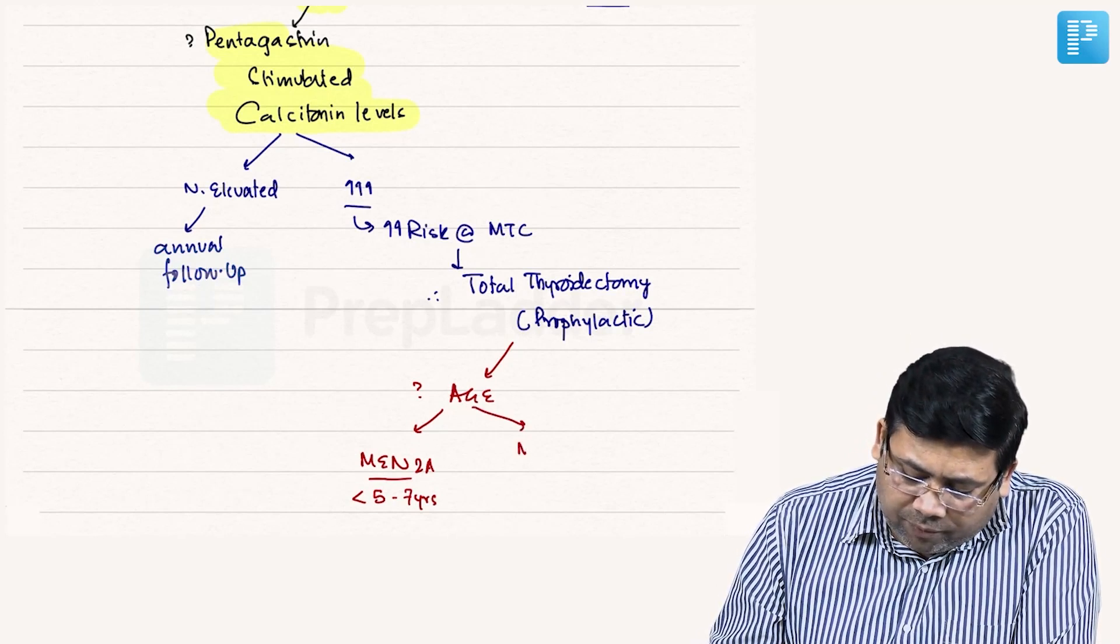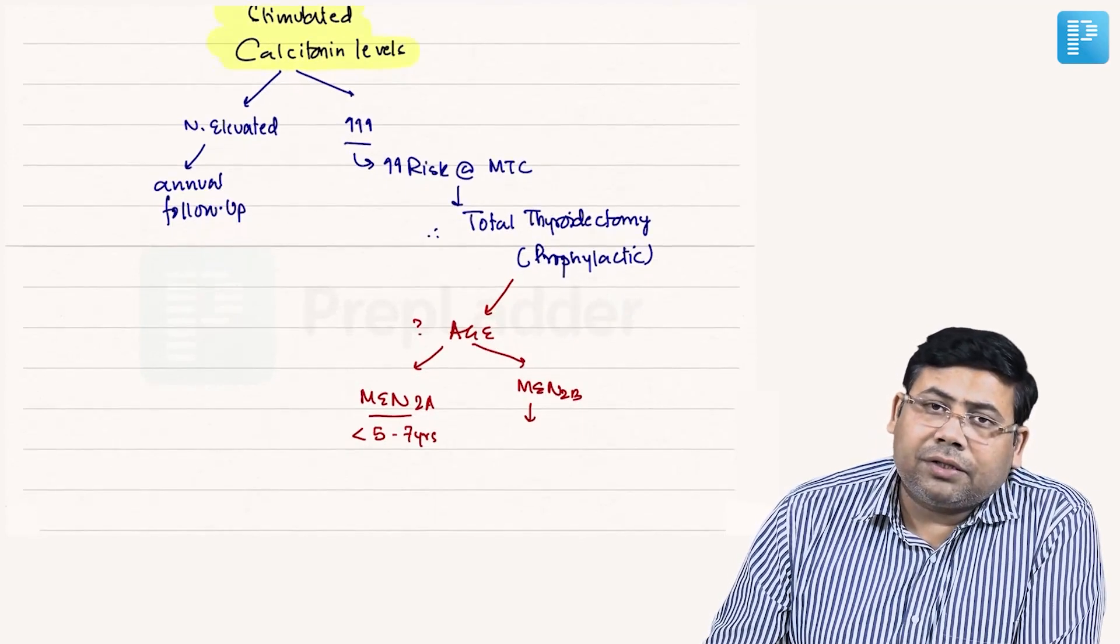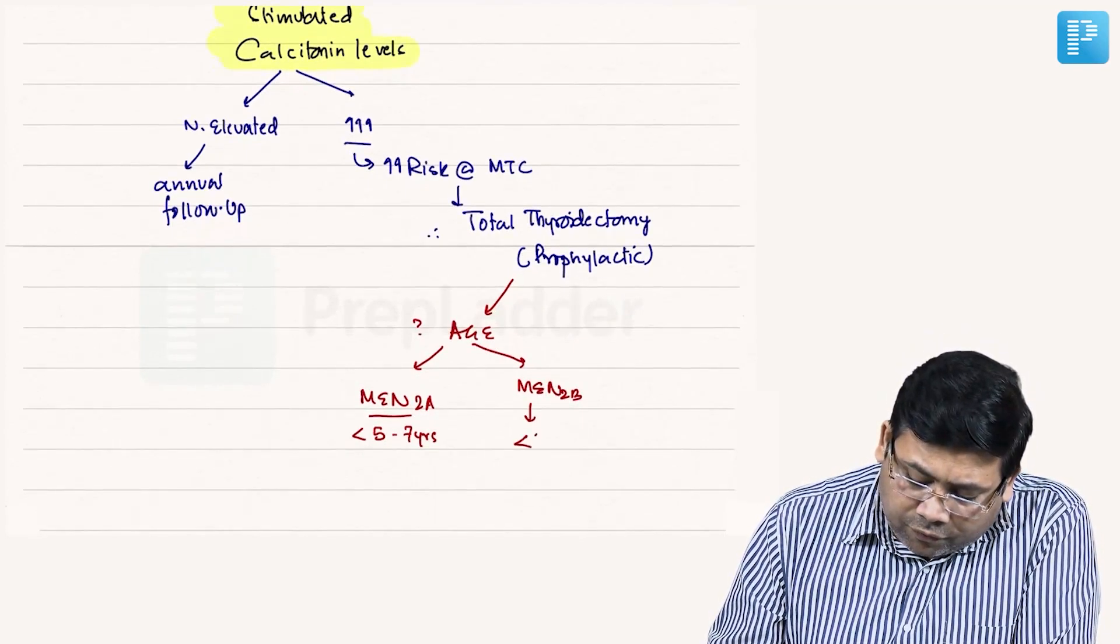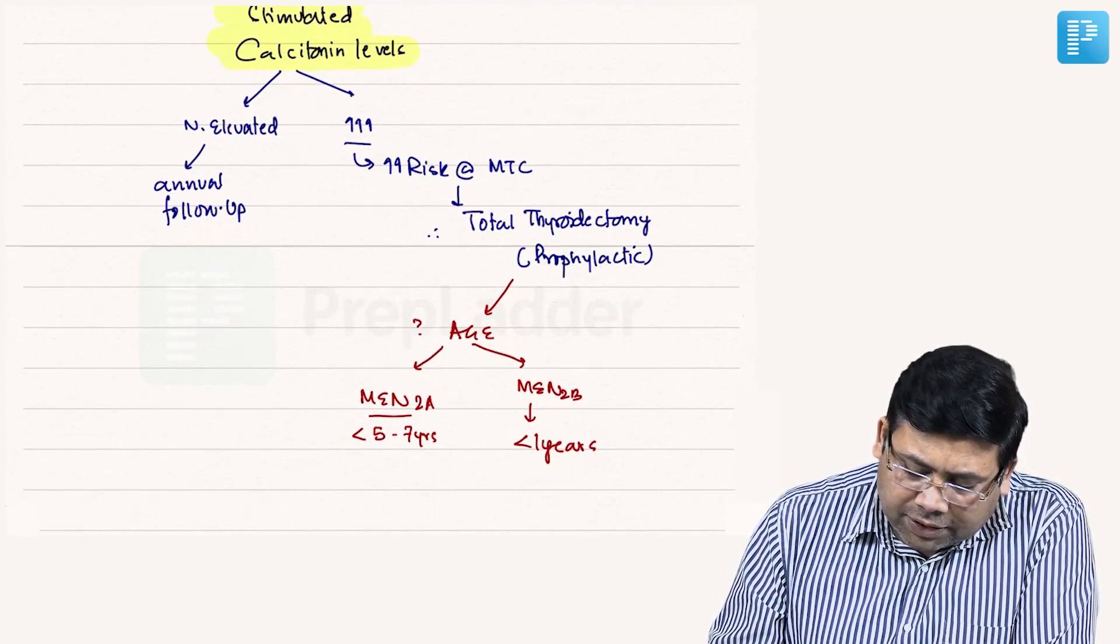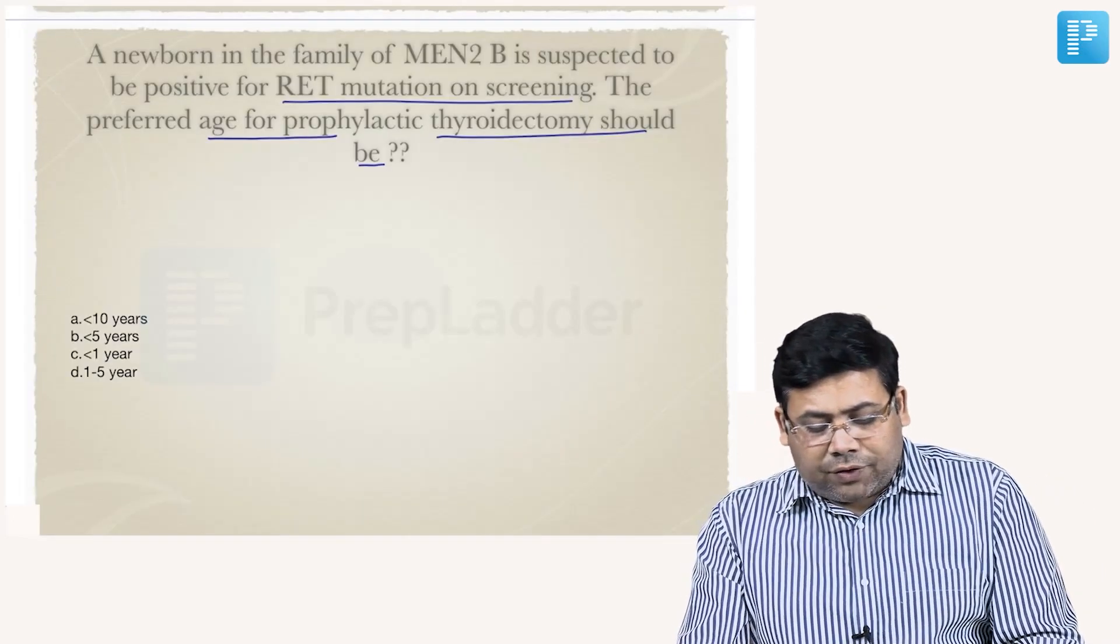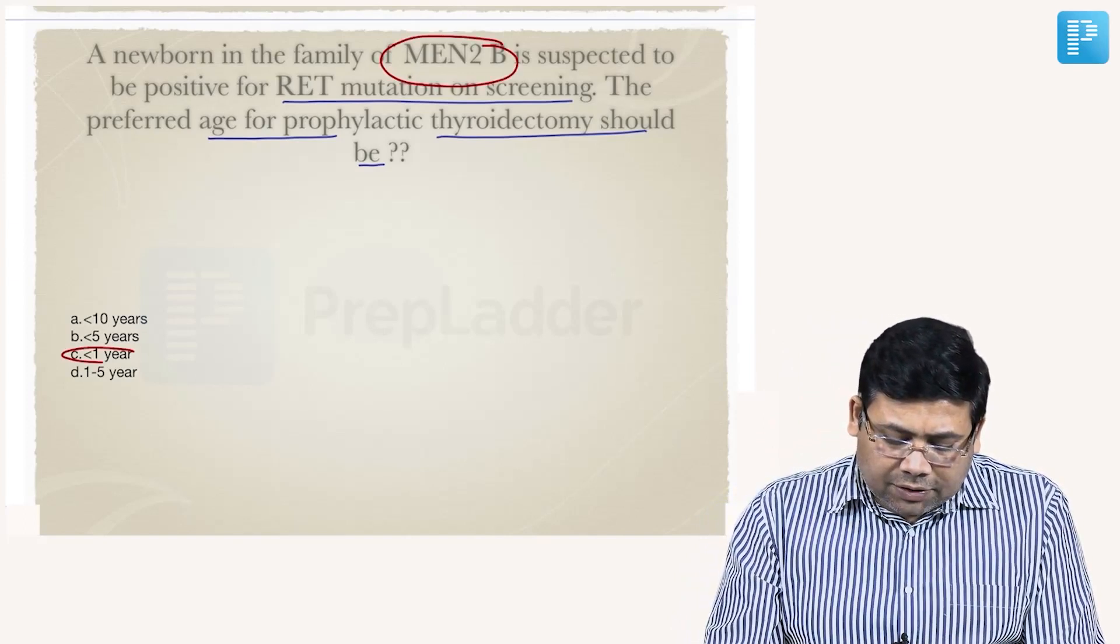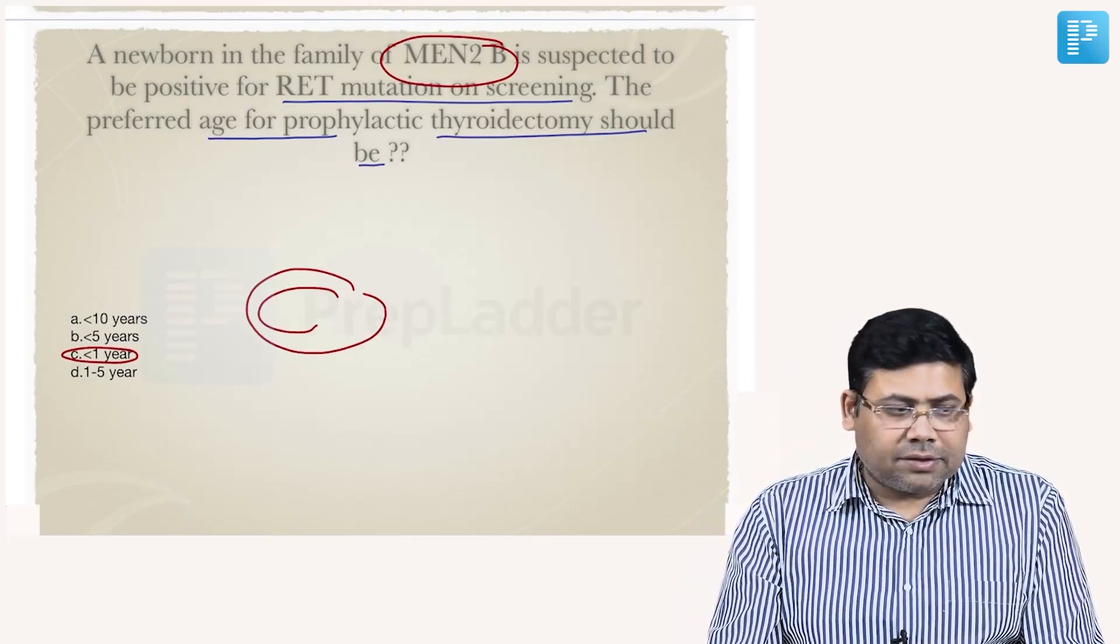For a patient of MEN2B, the malignancy usually happens by three to five years, so before the first year you will have to go. This is a case of MEN2B, and therefore the answer should be C.